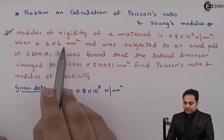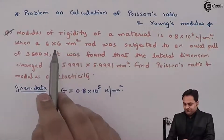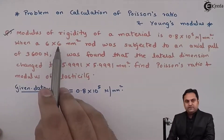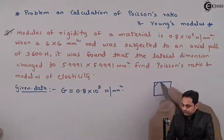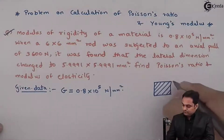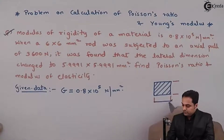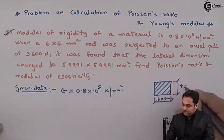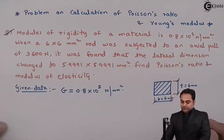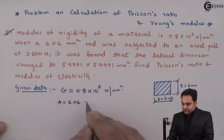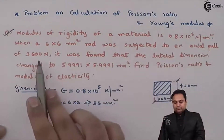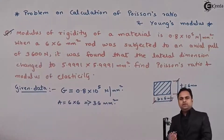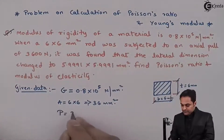Next, when a 6 into 6 mm square rod is given — this is the width and here we have thickness, so the cross-section area of the rod is square. B is equal to 6 mm and T is equal to 6 mm. Area will be 6 into 6, that comes out to be 36 mm square, and this rod was subjected to an axial pull of 3,600 Newton. So P is 3,600 Newton.